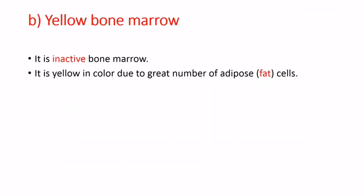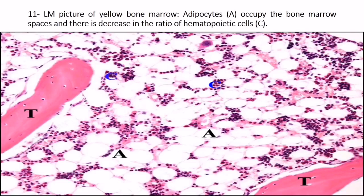Yellow bone marrow is inactive bone marrow. It is yellow in color due to the great number of adipose fat cells. A light microscopic picture of yellow bone marrow shows adipocytes occupying the bone marrow space, with a decrease in the ratio of hematopoietic cells.